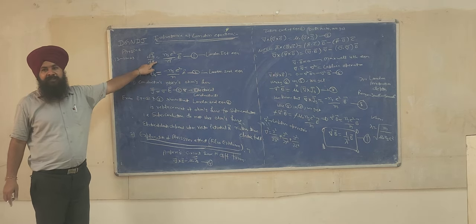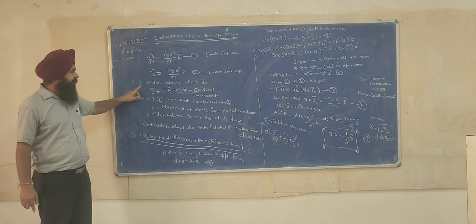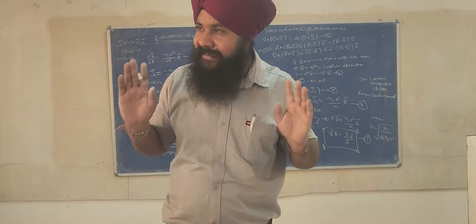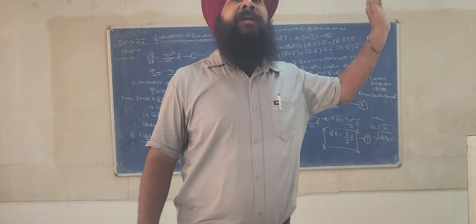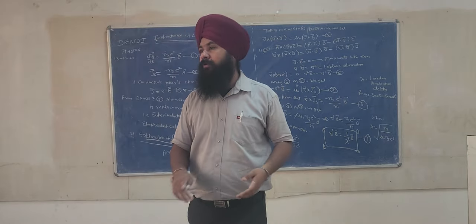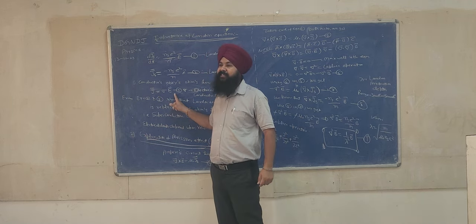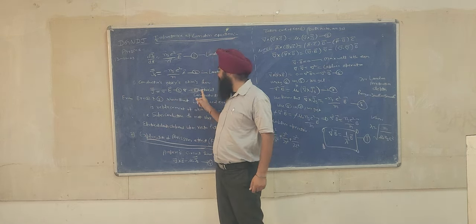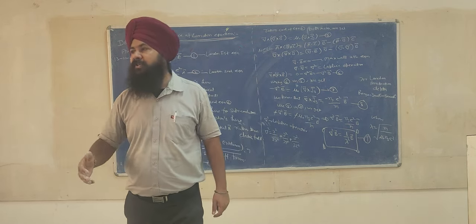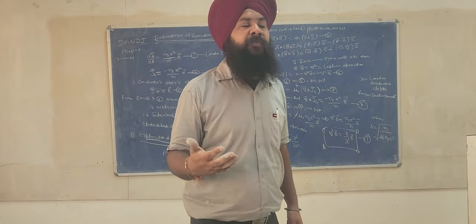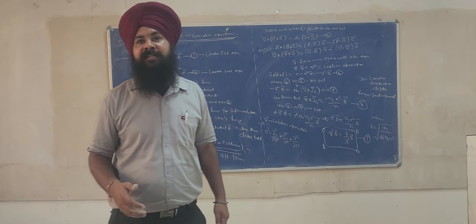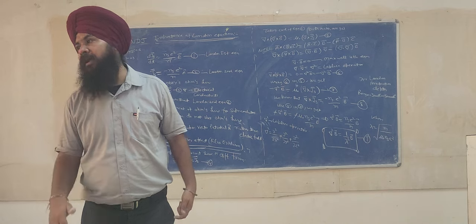This is called the London first equation, and this is called the London second equation. A conductor obeys Ohm's law, but a superconductor does not obey Ohm's law. Ohm's law is J = σE. We have two forms of Ohm's law: V = IR or J = σE. Both are different forms of the same law.